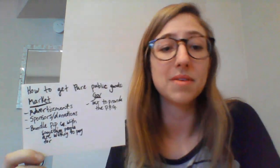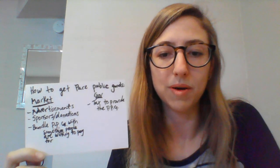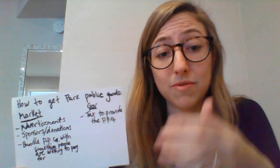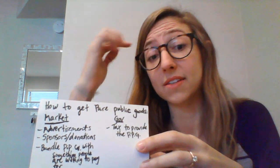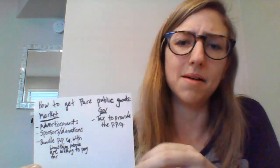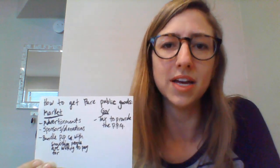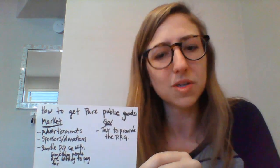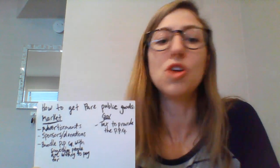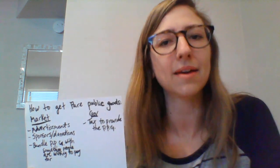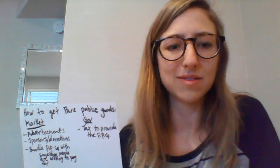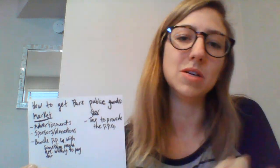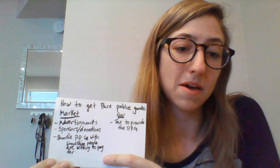We can also bundle the pure public good with something that people are willing to pay for. Firework shows are often provided by a festival, and the festival charges money for admission or food, then uses some of that money to provide the pure public good. Lighthouses were funded by user fees. Ronald Coase, a really prominent economist in the 20th century, wrote a paper called 'Lighthouse in Economics,' where he researched how lighthouses were historically funded. It used to be thought that pure public goods had to be provided by the government, but he found that lighthouses were funded by user fees on the docks nearby — boats would dock at the port and be charged a fee used to pay for the lighthouse. So we bundle the pure public good with something people are willing to pay for.